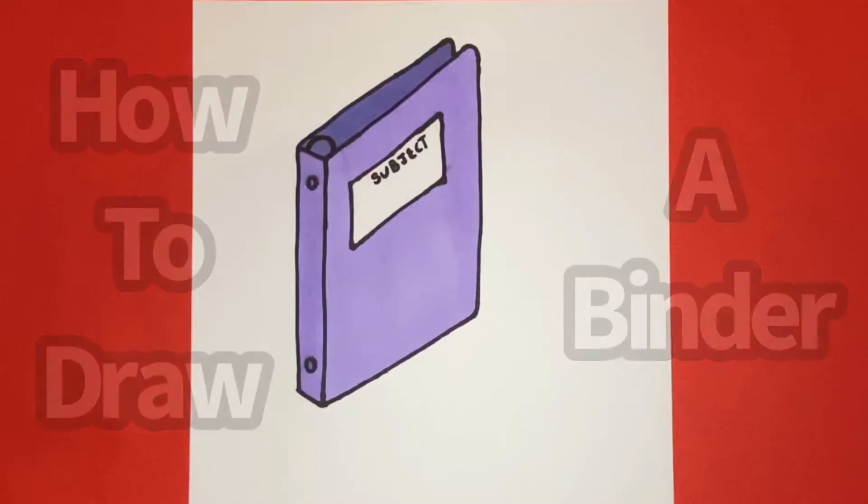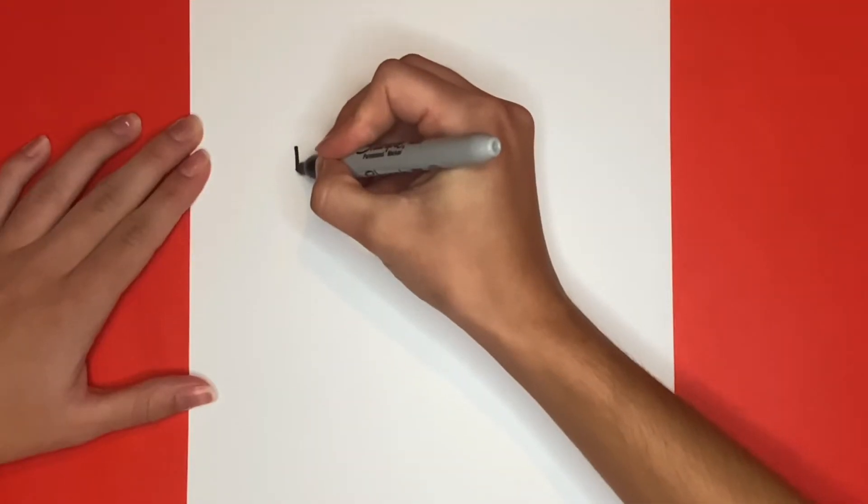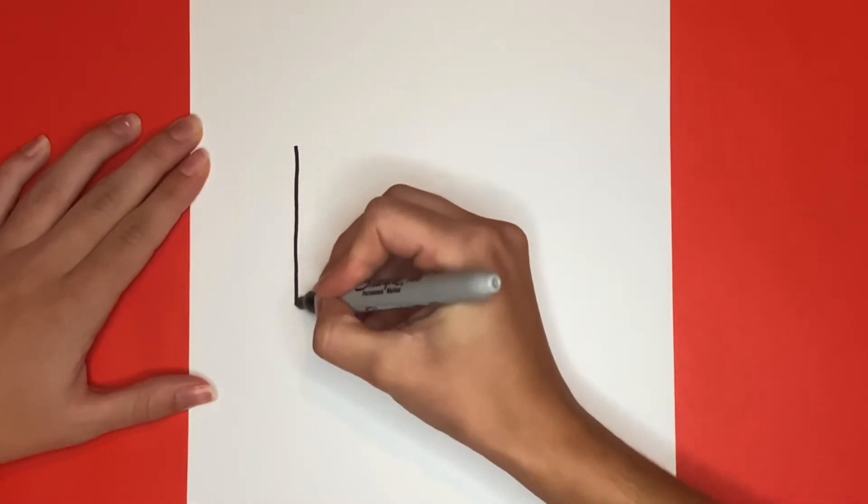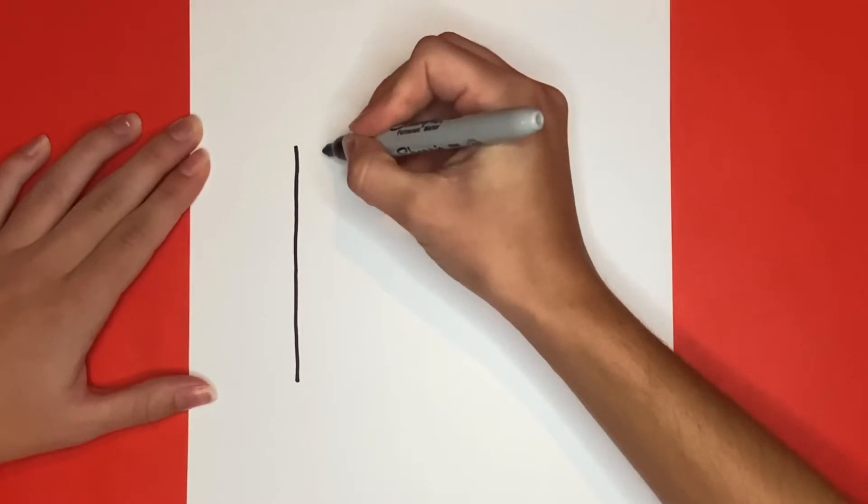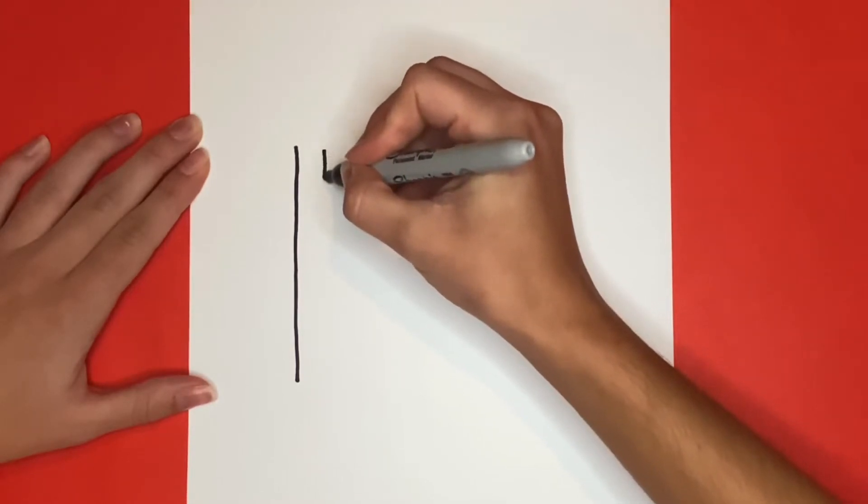How to draw a binder! We're going to start by drawing a straight line going up and down on the left side of our page. Then we're going to draw another straight line going up and down a little bit to the right of that one.